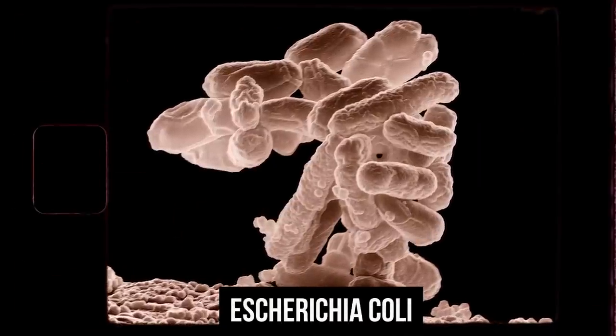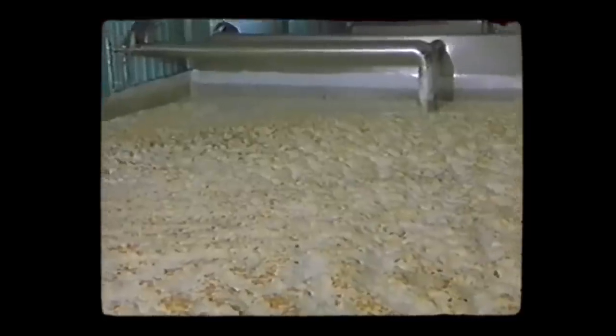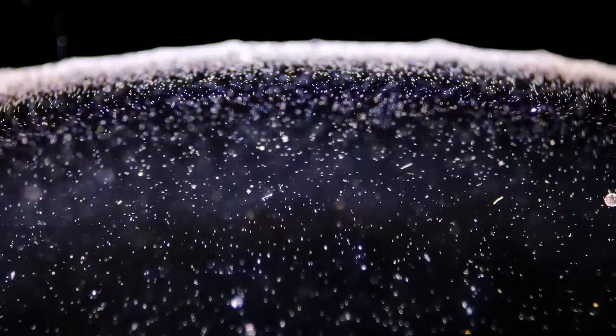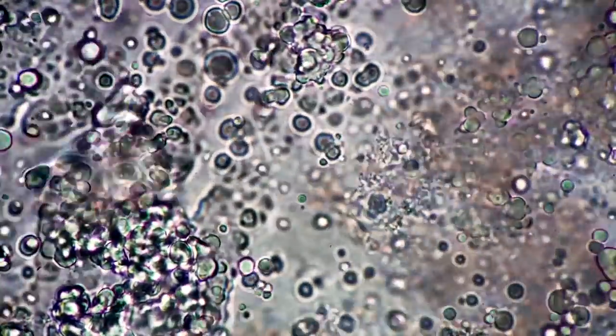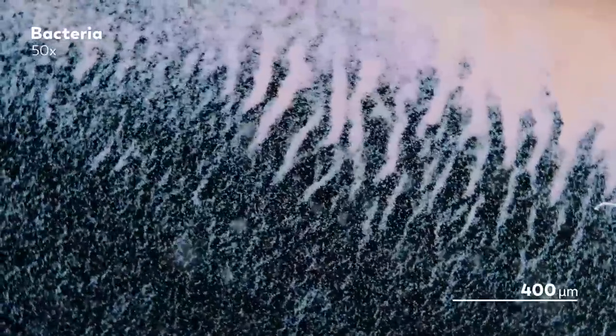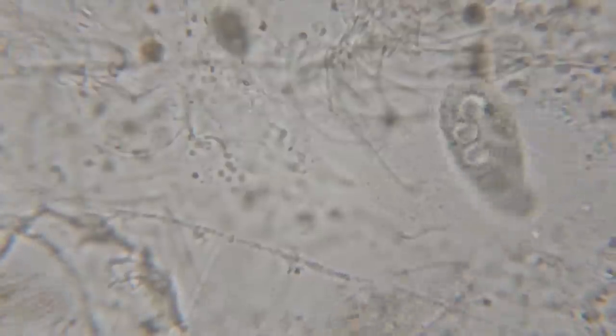They placed Escherichia coli, or E. coli, and yeast in different environments, including pure hydrogen, and the bacteria not only survived but also successfully multiplied and formed colonies. If such bacteria were on the Galileo probe, they could have survived.